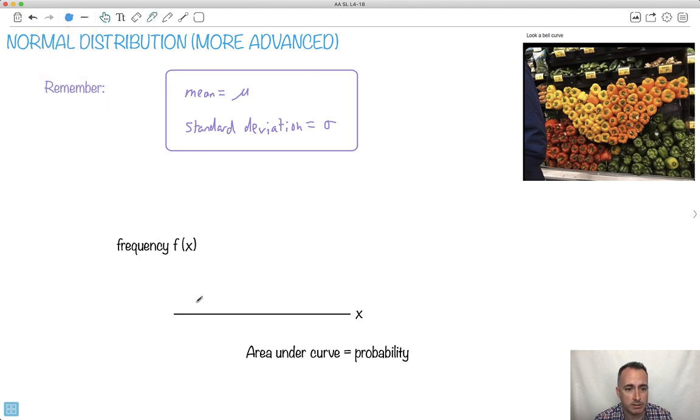We could also say that if we do the graph right here, this is what a normal distribution looks like. This right here, the middle point, would be the mean. This would be the mean plus one standard deviation. This would be the mean minus one standard deviation. And don't forget the area under the curve is a probability.